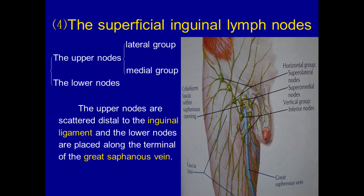The superficial inguinal lymph nodes consist of upper nodes — divided into a lateral group and a medial group — and lower nodes. The upper nodes are scattered distal to the inguinal ligament, and the lower nodes are placed along the terminal part of the great saphenous vein.